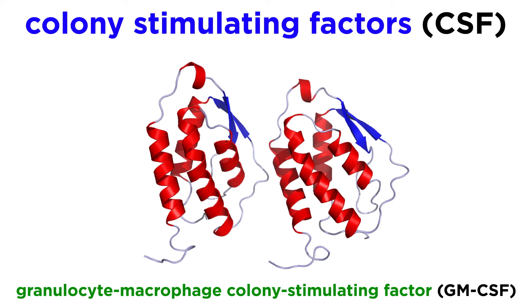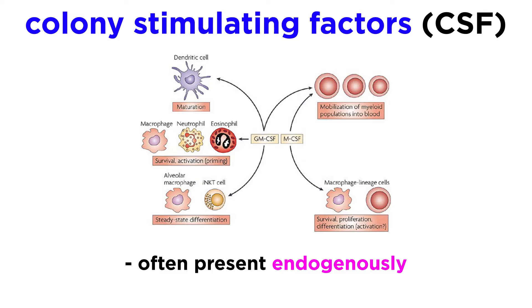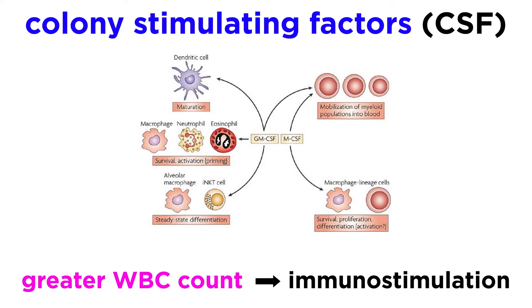Colony stimulating factors act to enhance the production, maturation, and bone marrow release of various types of white blood cells into the blood. These factors are often present endogenously, but recombinant forms are sometimes given exogenously. By enhancing the overall count of white blood cells, it's easy to see how this general mechanism leads to immune system stimulation.